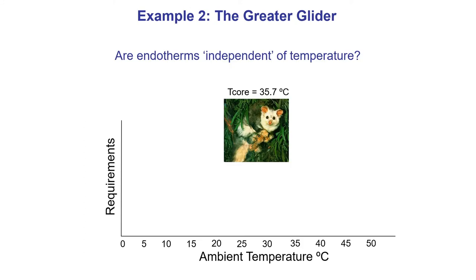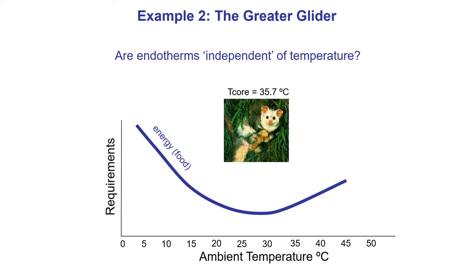Now a second example that isn't integrating DEB theory but shows how we can do this for an endotherm — because I've only spoken about ectotherms so far. Here's an Australian gliding possum, the greater glider. People often think endotherms aren't sensitive to temperature, but of course they are. The heat budget equation is exactly the same as for a lizard — but in the case of an endotherm, body temperature is not changing, so we solve the heat budget in terms of metabolic rate: what metabolic rate is required to keep body temperature constant, in this case about 35.7 degrees.